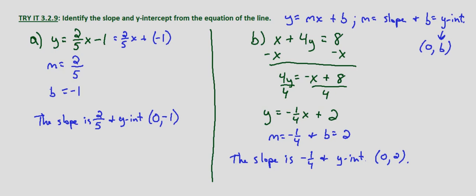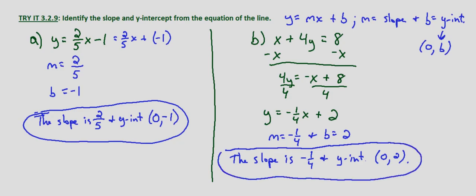So for y equals 2/5x minus 1, the slope is 2/5 and the y-intercept is 0, negative 1. And for x plus 4y equals 8, we determine that that is equivalent to y equals negative 1/4x plus 2 in slope-intercept form. So the slope is negative 1/4 and the y-intercept is 0, 2.